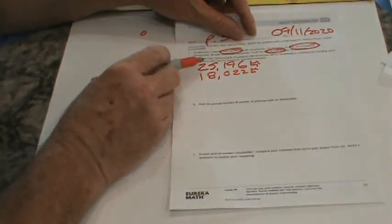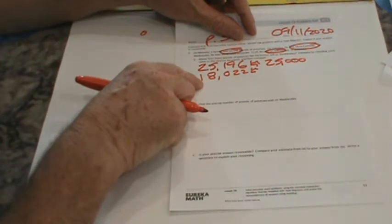Alright so 25,196 and we're gonna round it to the nearest thousand. And 18,023 and we're gonna round that to the nearest thousand too. Well is this closer to 25,000 or 26,000? Much closer to 25,000. Is this closer to 18,000 or 19,000? Well it's only 22 away from 18,000 so we're gonna round to 18,000. Okay now we're ready to add. Five plus eight is 13. Bring up the one, two, three, four. So he sold about 43,000 pounds on Monday and Tuesday.